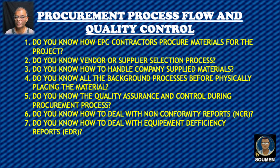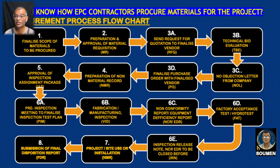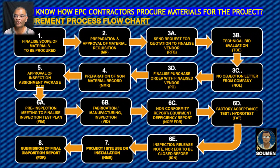The procurement procedure for an EPC contractor working in Saudi Arabia — or these can be the basic fundamentals for procuring material for a project in most countries in the world. First step: you can see I made a flow chart, and this flow chart will sequentially tell you the processes. First of all, finalize the scope of material to be procured. At the beginning of the project, we should have a key design drawing.